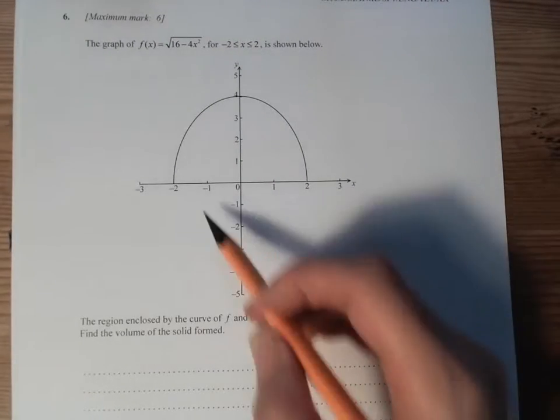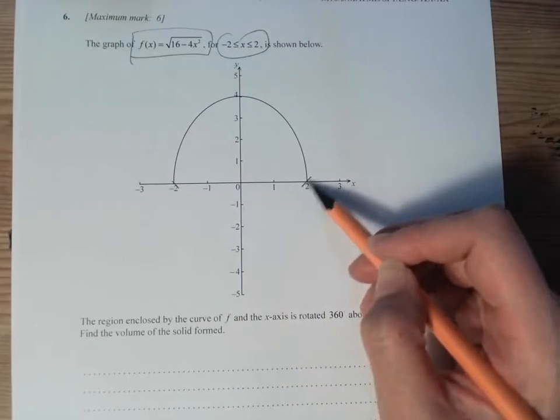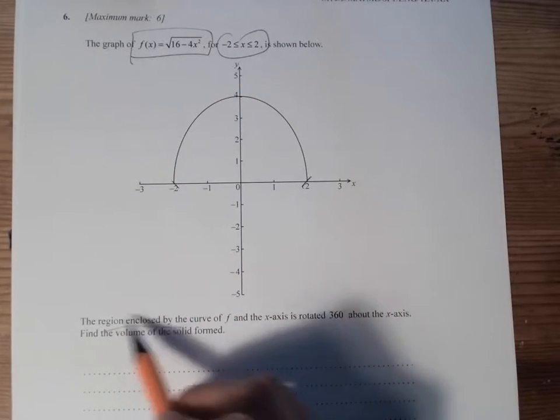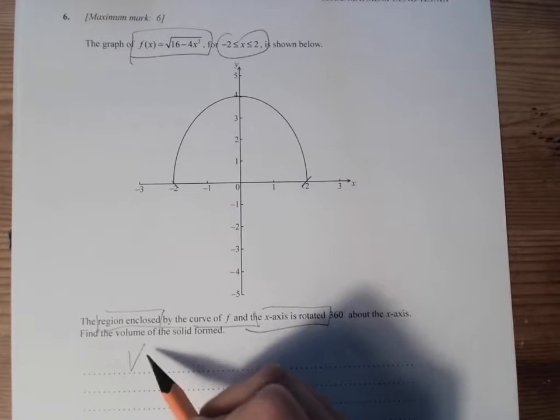This time we have a calculus question here with a function and limits. We know that these are the two points. Now we want the region of the curve of rotation, which is the volume here.